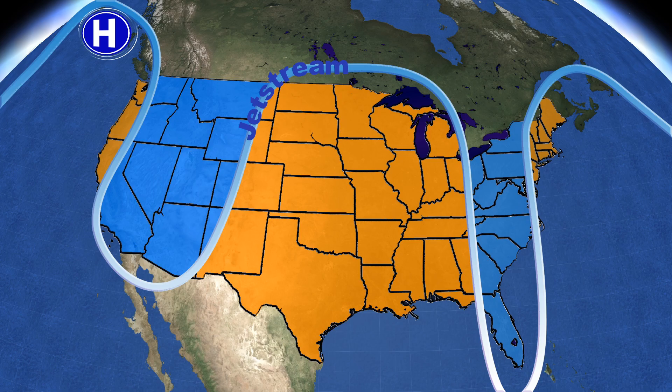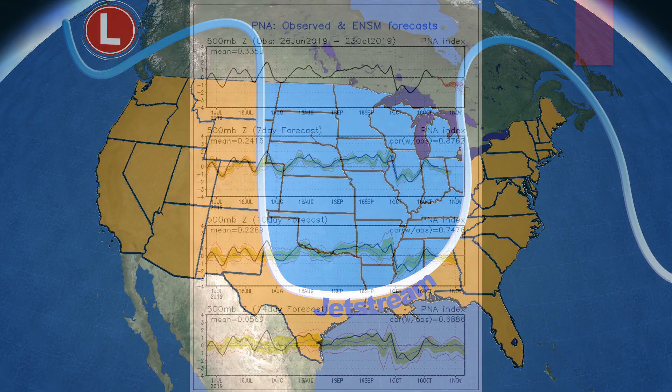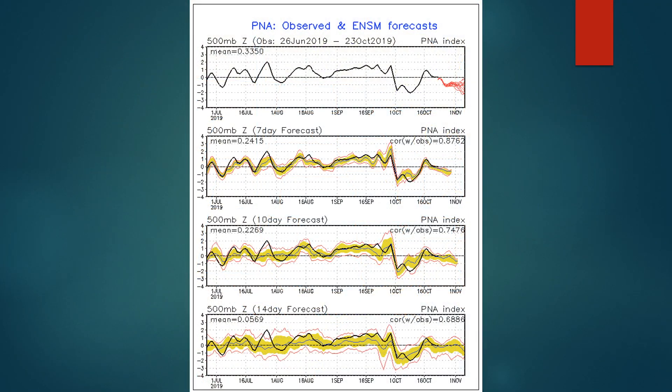When there's a negative index, that's associated with troughing, which means the western half of the United States gets warmer and drier, and the eastern half of the country gets cooler and wetter. Looking at the ensemble mean outlook for the PNA, most of the models are forecasting a negative PNA for the beginning, end, and mid parts of November.